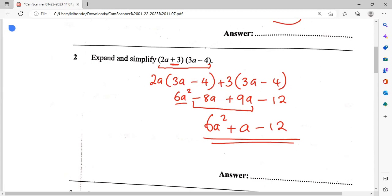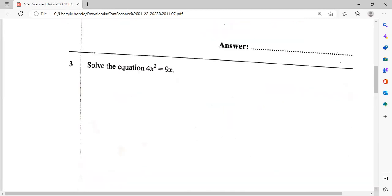Then here we have an equation. We first of all have to write this as the 4x² minus 9x is equals to zero. So at this point we can factorize: x then we have 4x minus 9 is equals to zero.